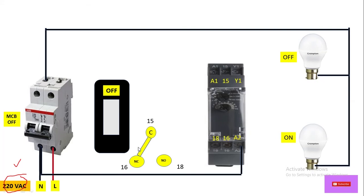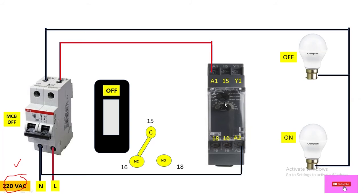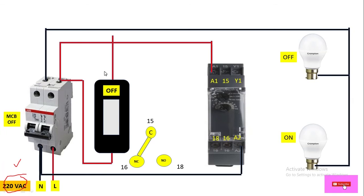For phase wiring, take a red wire from the MCB output terminal and connect it to the A1 terminal. Now the timer has phase at A1 and neutral at A2. For trigger input supply, take a wire to the input terminal of the switch, and from the output terminal of the switch connect it to the Y1 terminal, which is the trigger input terminal.